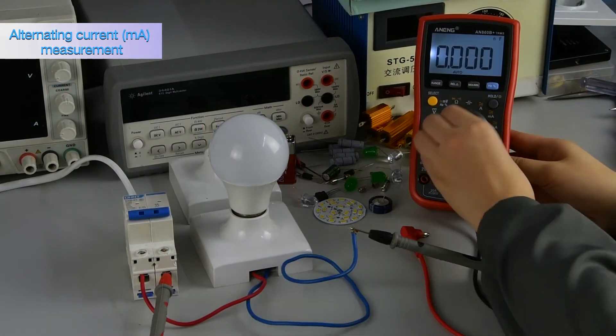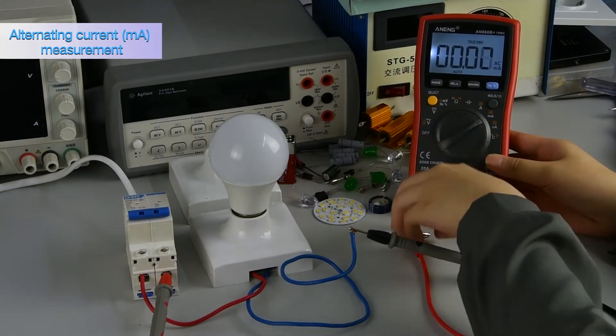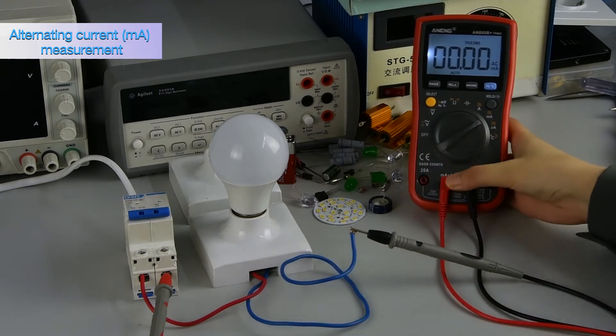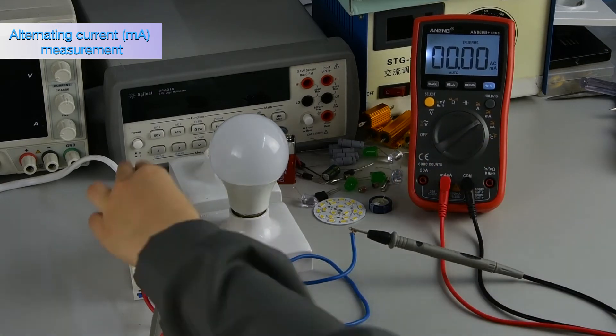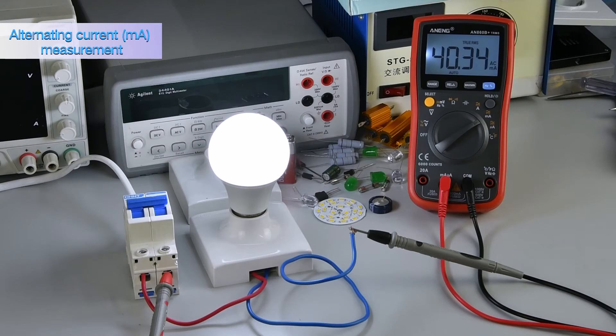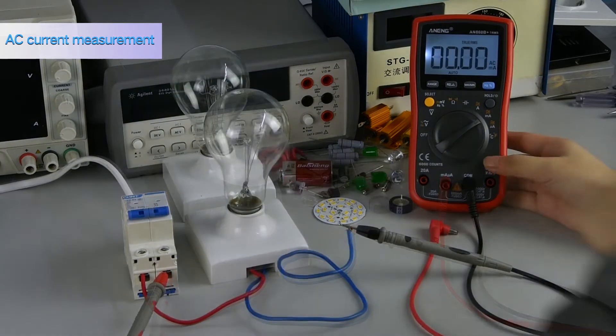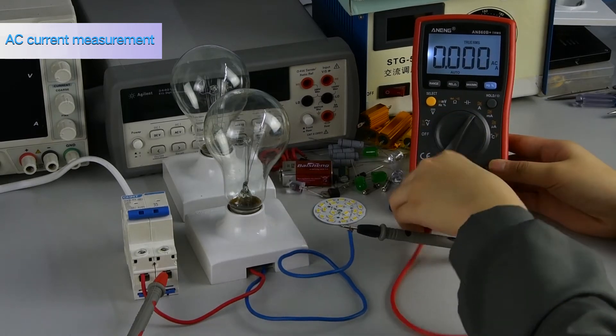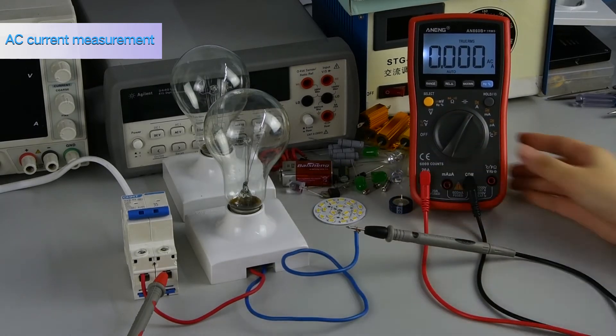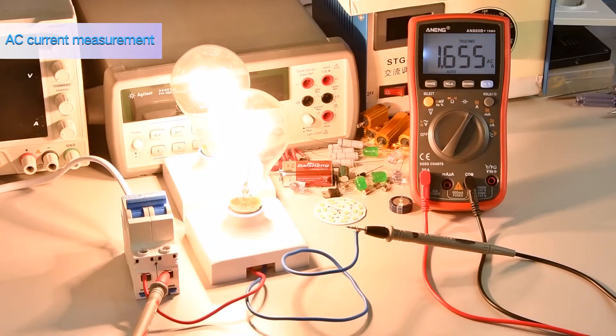Alternating current mark measurement. AC current: the current at work can be measured by placing the watch pen in the corresponding position.